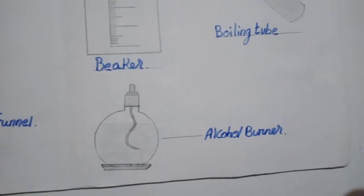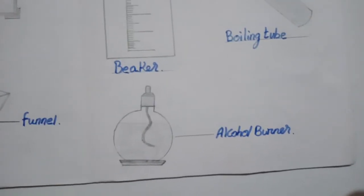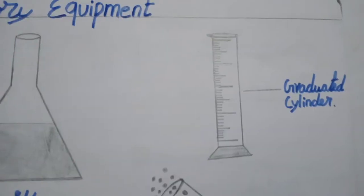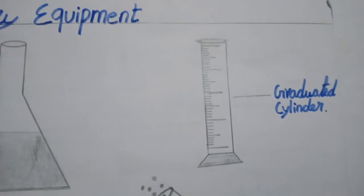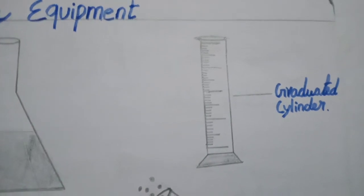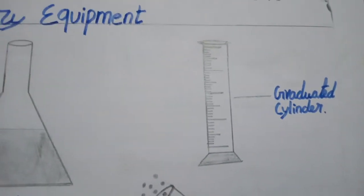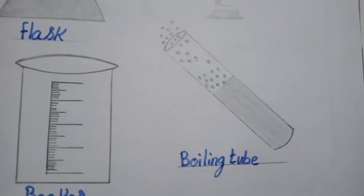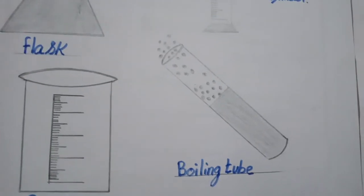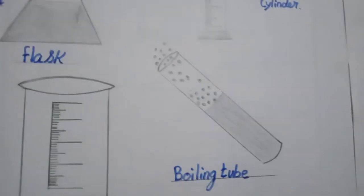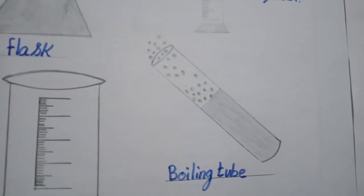This alcohol burner is used to heat the test tube, beaker, or flask. Next one is a cylinder. This cylinder is used to measure chemicals. Next one is a boiling tube — this tube is like a small test tube, and this is a big boiling test tube.